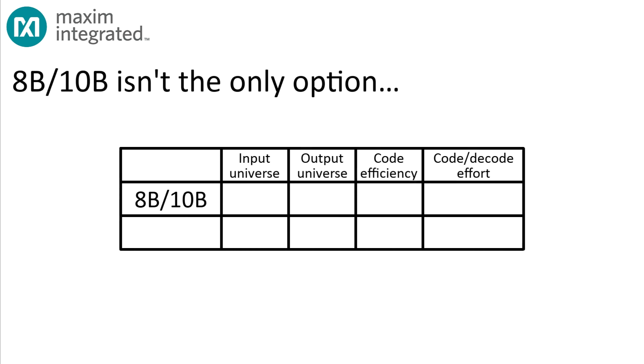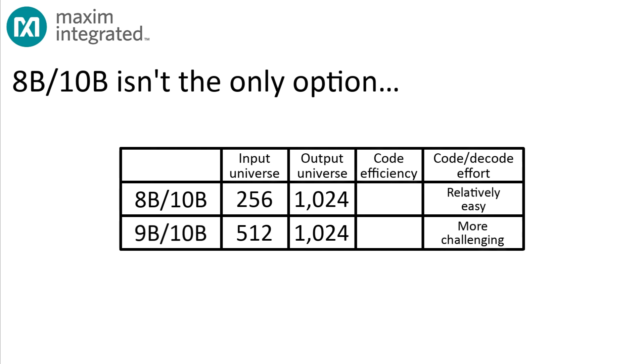And, of course, 8B-10B encoding isn't the only game in town. Some newer GMSL devices up the ante with 9B-10B encoding. In this method, the stream is organized into 9-bit input words and mapped onto 10-bit code words. Since the input universe is twice as large, 512 elements, the mapping and disparity management is a little bit more complicated, but the code efficiency goes from 80% to 90%, so the complexity can definitely be worth the trouble.